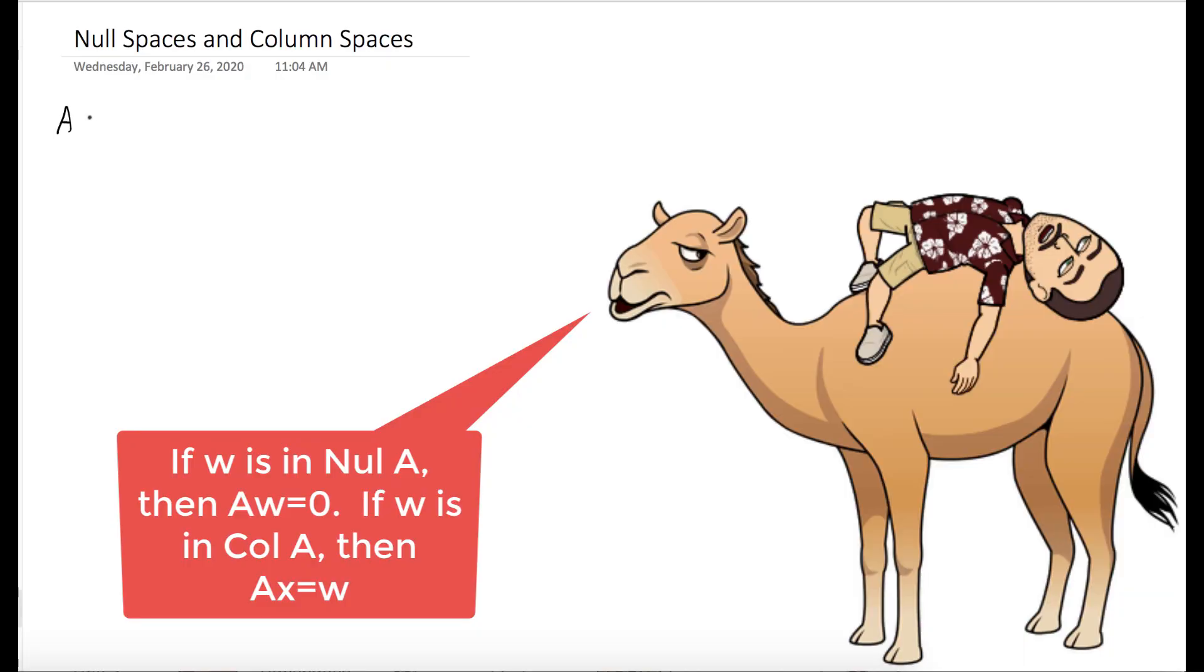I know this question sounds intimidating because of all the scary words, but really, it's just asking us to do some calculations that we've done earlier this semester. So for w to be in the null space, we just want to check if A times w gives us the 0 vector.